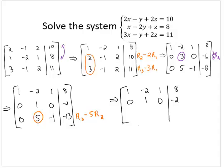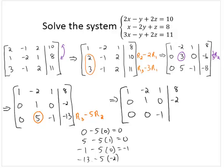Now, 0 subtract 5 0's is 0. 5 subtract 5 1's is 0. Negative 1 subtract 5 0's is negative 1. Negative 13 subtract 5 negative 2's is negative 13, add 10, is negative 3.